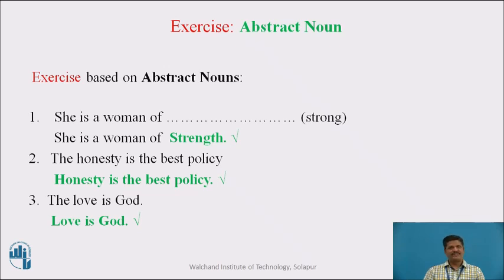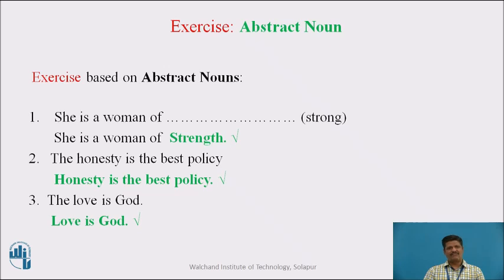Sentence No. 3: 'The Love is God.' Generally, Abstract Nouns do not take the Definite Article 'The' before them. Love is an Abstract Noun and does not take 'The' before it. So the right sentence is: Love is God.